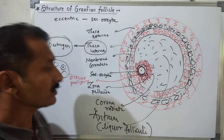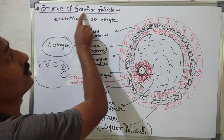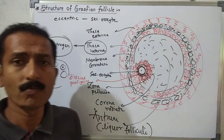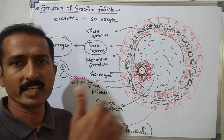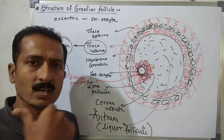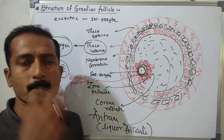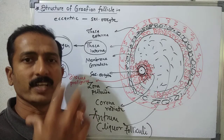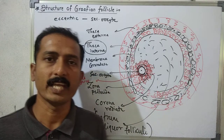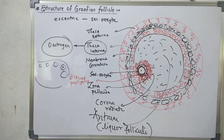This is all about the structure of the mature Graafian follicle — the stage just before the release of the ovum. In the next video we shall discuss the remaining parts of the female reproductive system, including Fallopian tubes, uterus, and vaginal parts. Thank you.